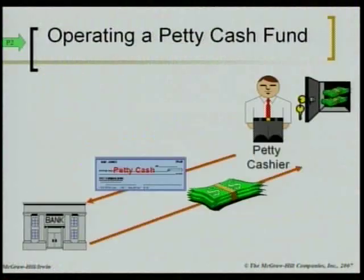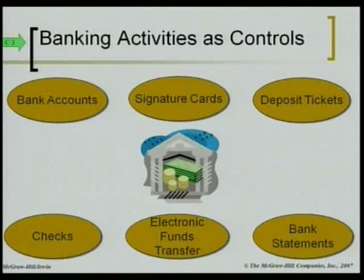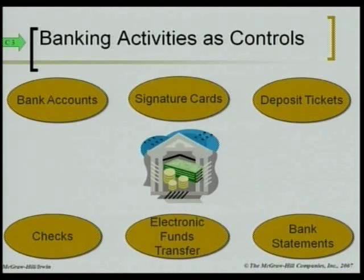Let's talk about bank activities as controls. This chapter covers internal controls to protect assets and ensure reliable accounting. Our bank can be our friend — they have procedures in place that help us protect our assets, but only if we actually use those tools.